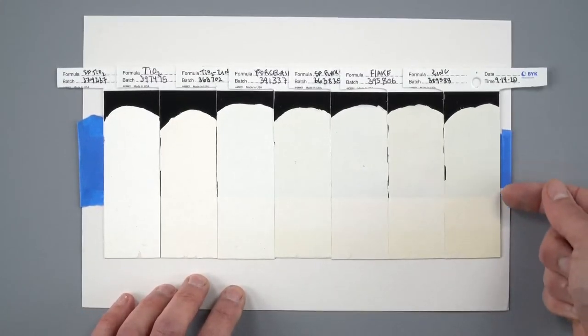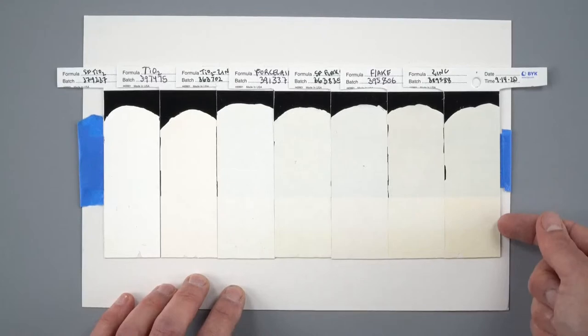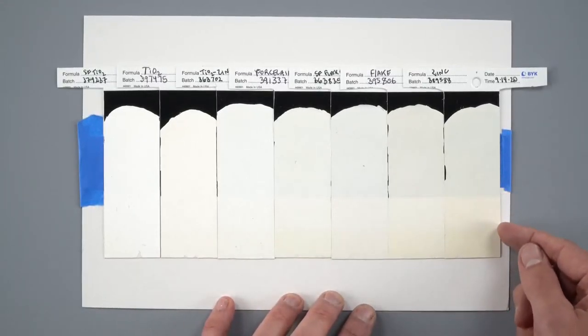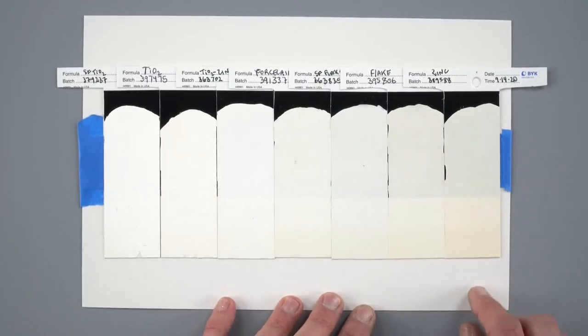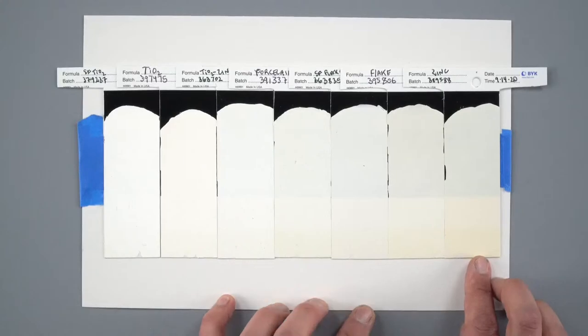And then finally zinc white at the end. You can see that zinc is the most translucent color we have in the palette in terms of whites. Okay, it yellows a little bit on its own. It has a little bit of a yellow cast, but beautiful translucency.